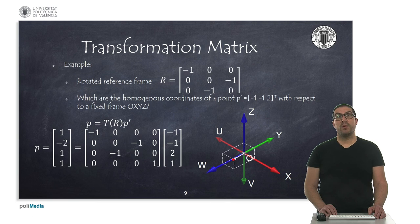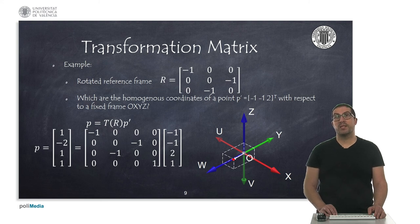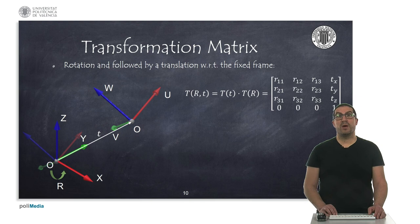In a second example, we again want to compute the coordinates of P with respect to the fixed frame OXYZ. Our data is the point P' expressed with respect to the mobile frame OUVW, and the transformation between these frames is T. With that transformation, we can simply compute the coordinates of P by multiplying T with P'. In general, a transformation matrix represents the combination of a rotation followed by a translation with respect to the fixed frame, as expressed in the general form used in robotics.